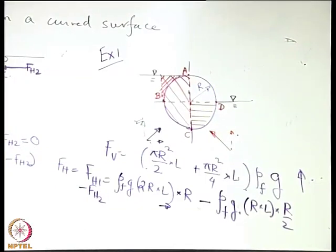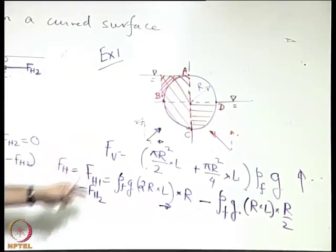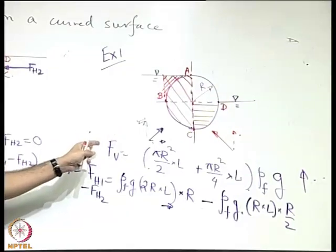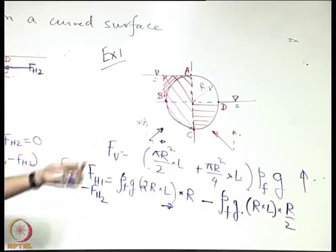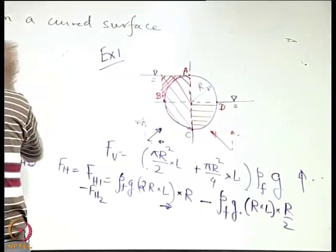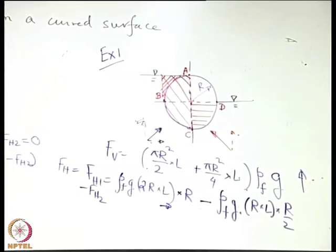Once you have the two individual components, you find the resultant by vector addition. Let us consider a second example.